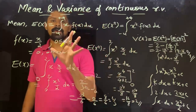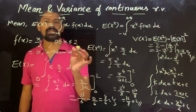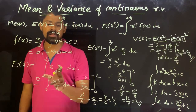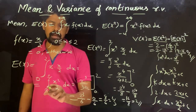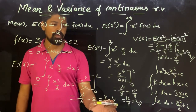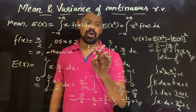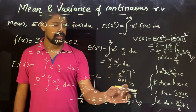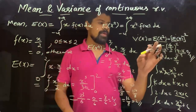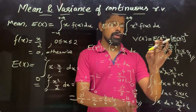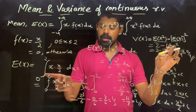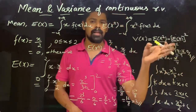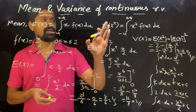So we have found the mean E(x) = 4/3 and variance of x = 2/9. These are the results for this problem.